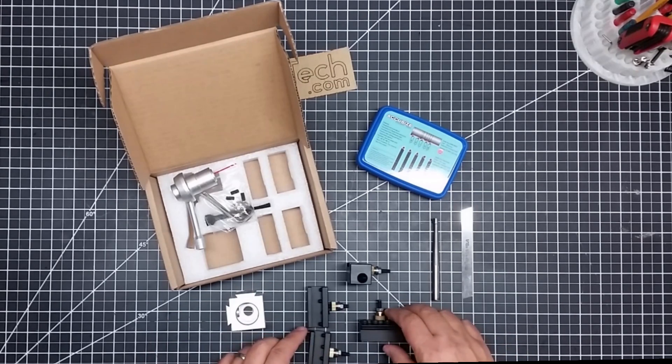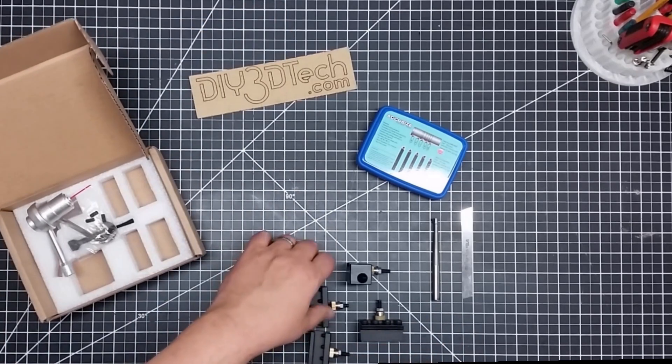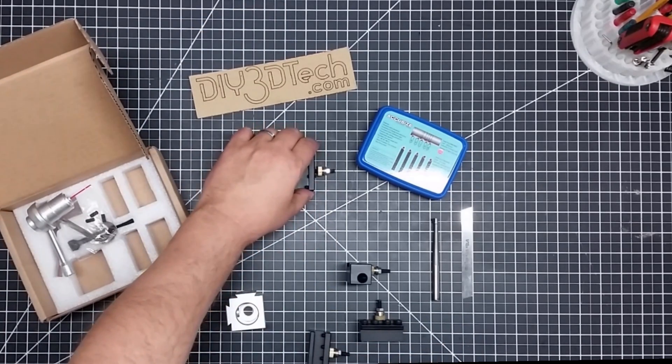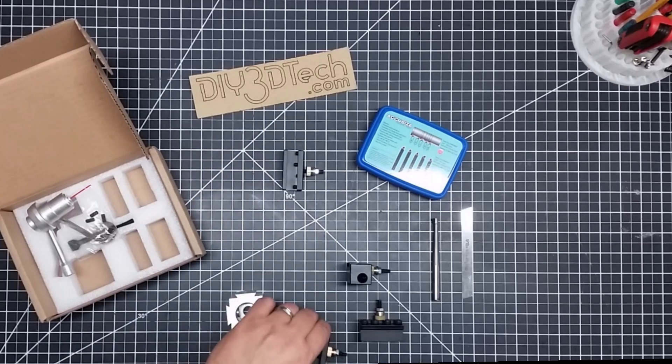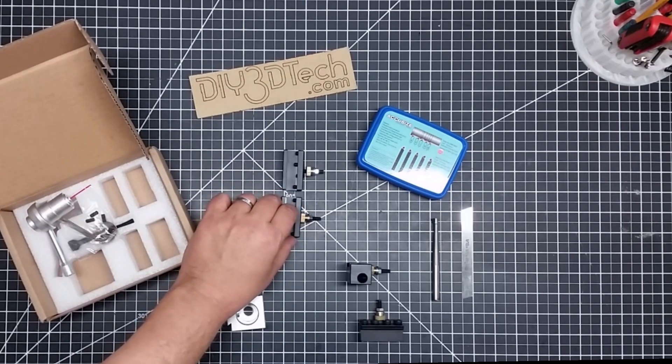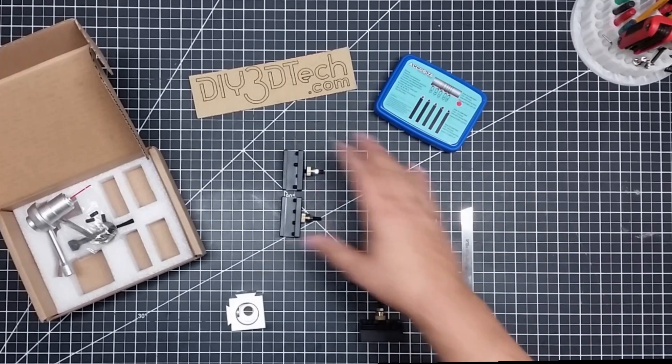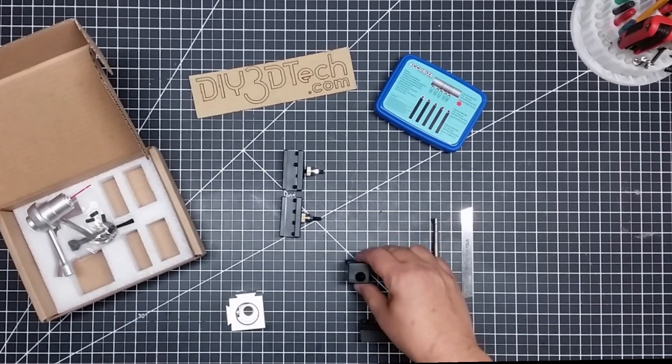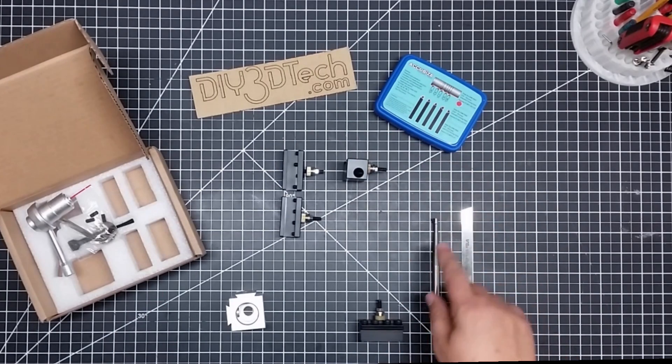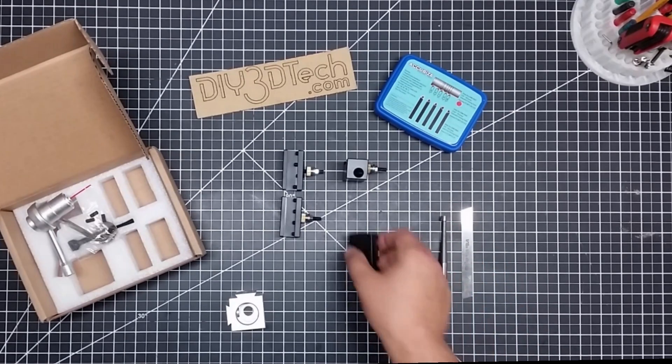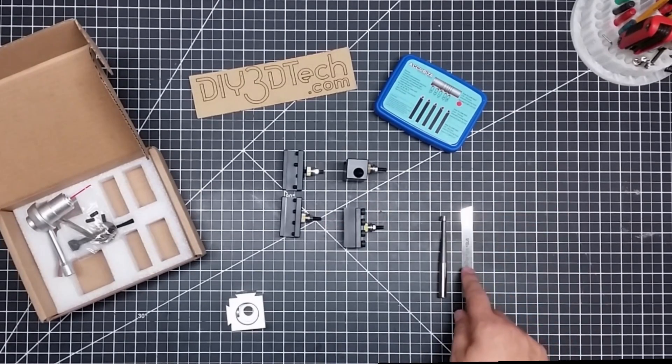If we break this up, you have basically two standard tool holders. This one is for a boring bar. For those that don't know, this is a boring bar. And then you have one for a cut-off tool. And for those that don't know, this is a cut-off tool. They give you some Allen wrenches and also, nicely enough, some of these extra little grub screws.